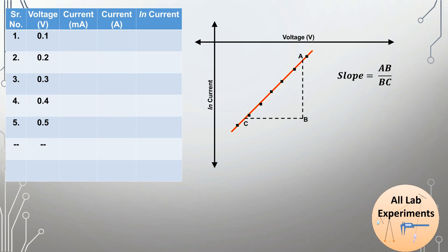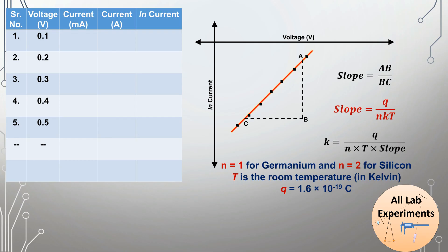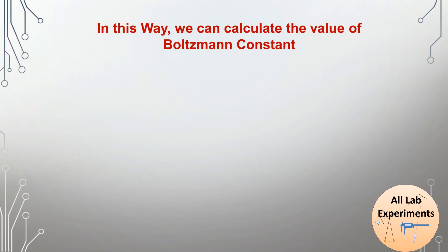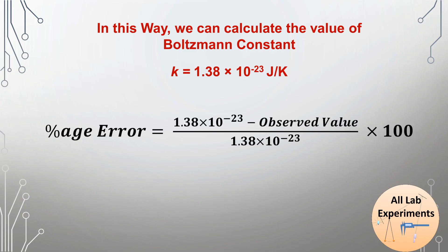Using the formula derived earlier, the Boltzmann constant K equals Q divided by (N × T × slope). The slope is determined from the graph, N is 1 for germanium or 2 for silicon, T is the experimental temperature in Kelvin, and Q is the electron charge. The known value of Boltzmann constant is 1.38 × 10⁻²³ J/K, and we can also calculate the percentage error in our obtained value.